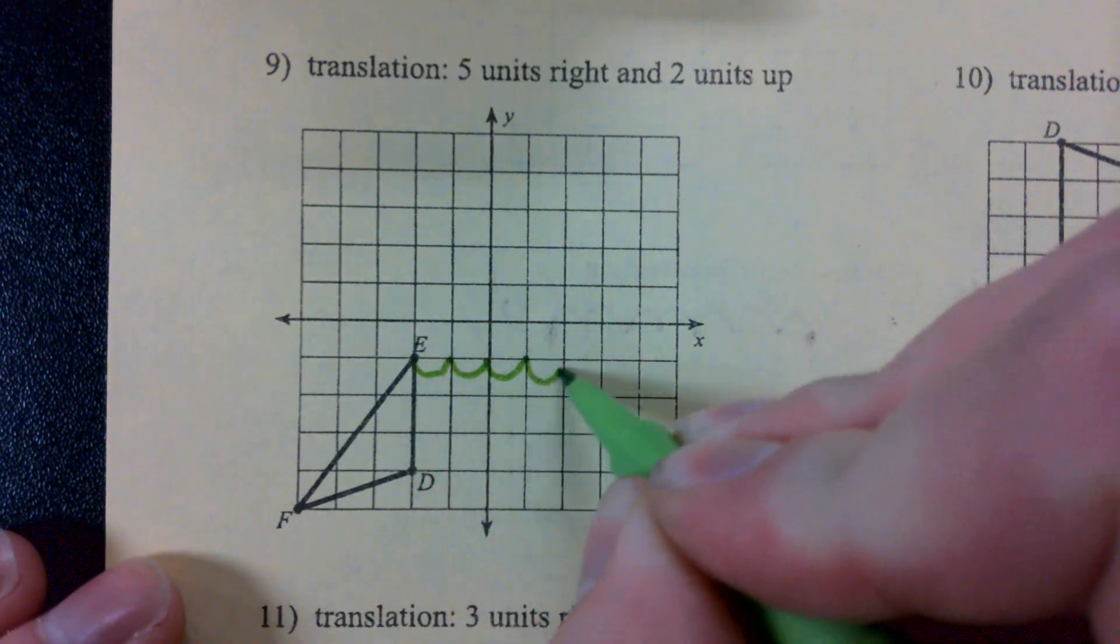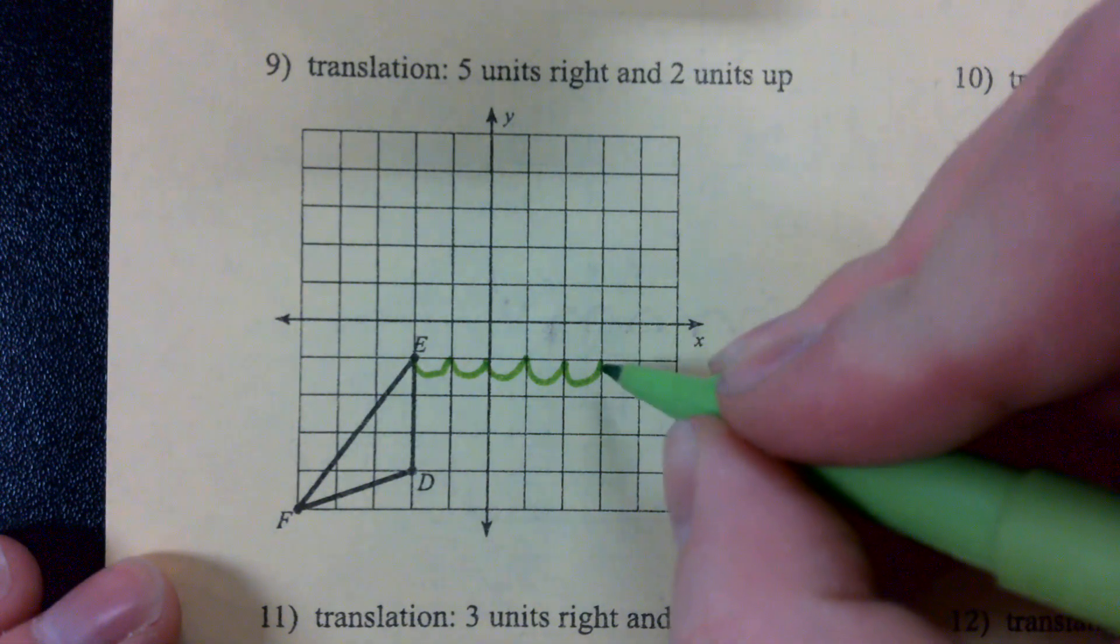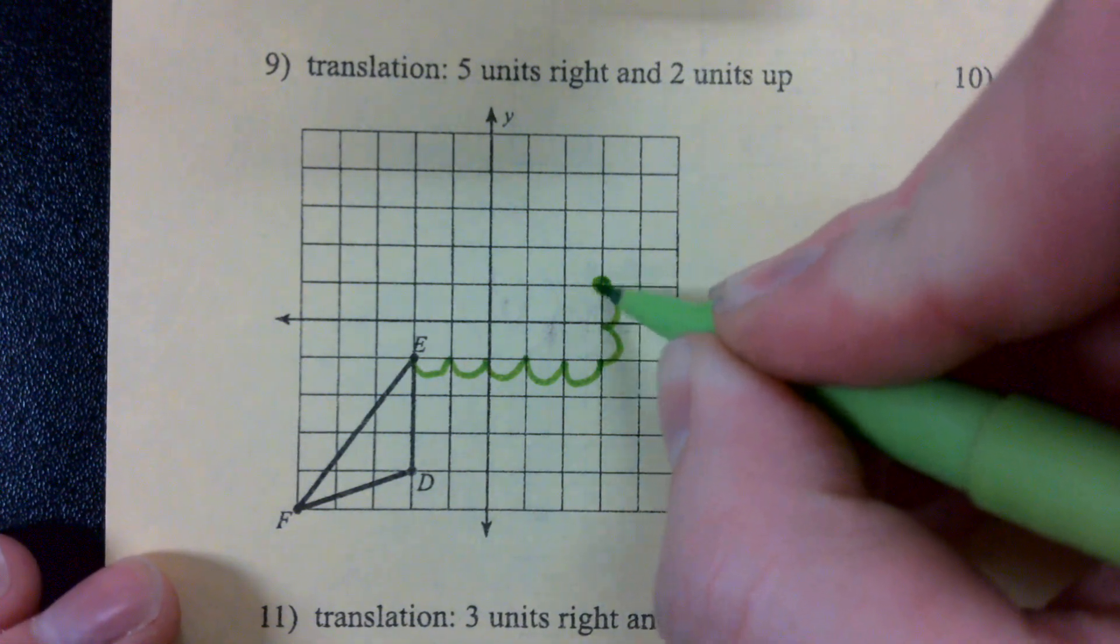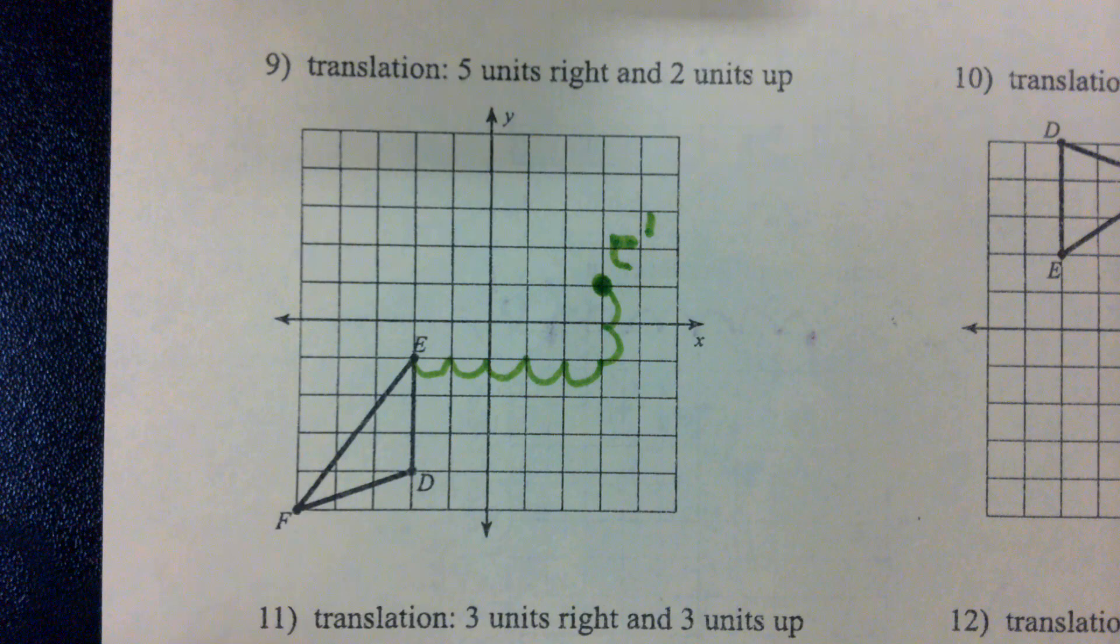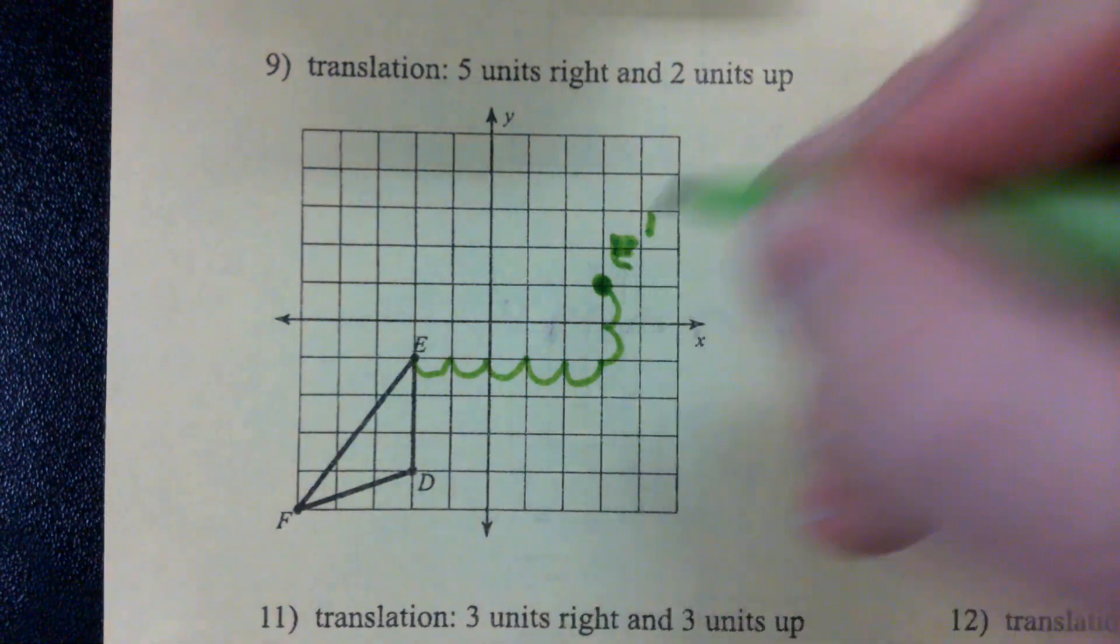5 units to the right. 1, 2, 3, 4, 5. 2 units up. 1, 2. Make my new point. Call it E prime. Sorry, that's an E.